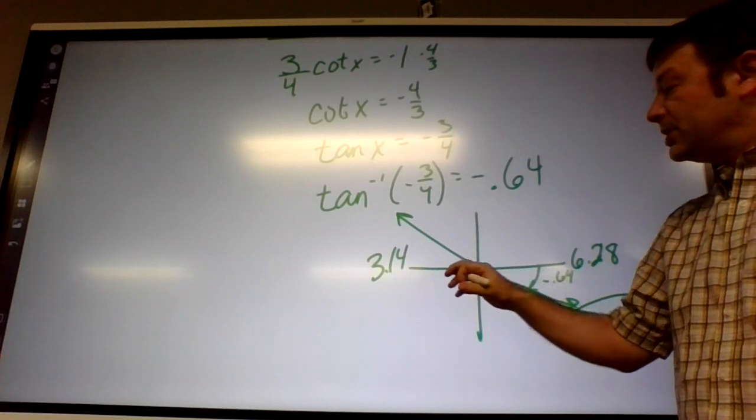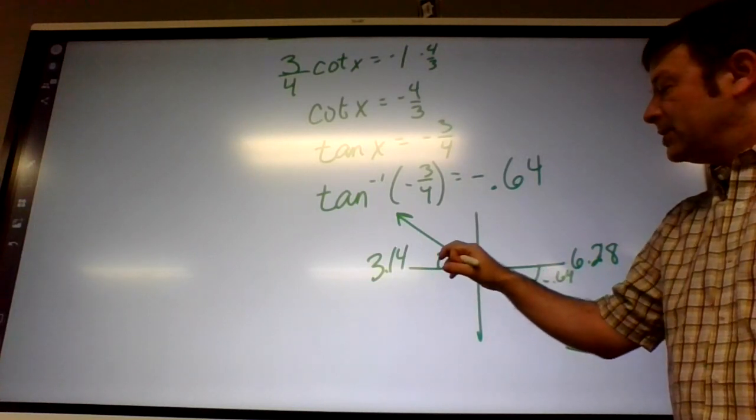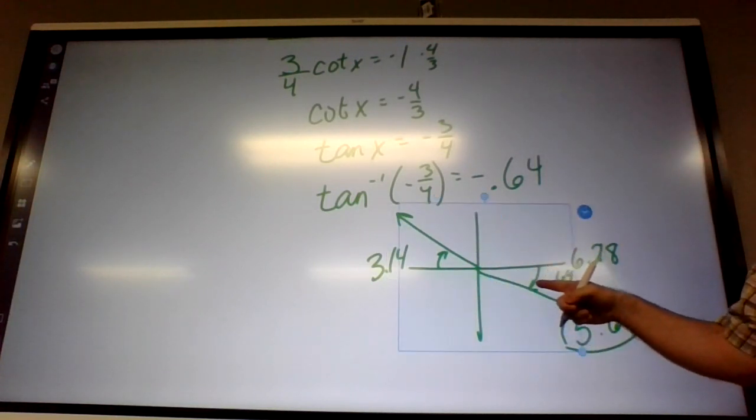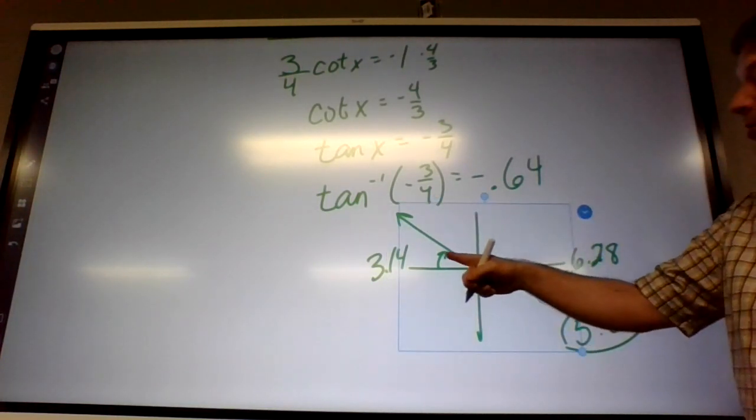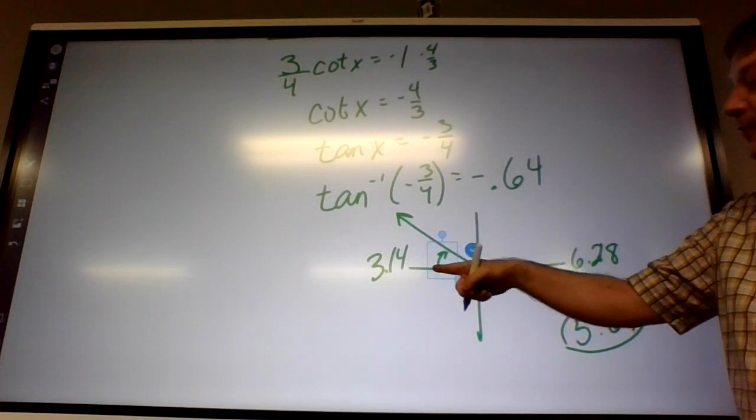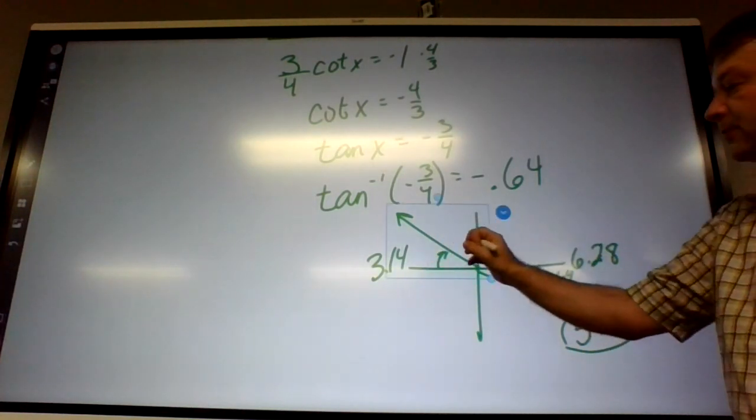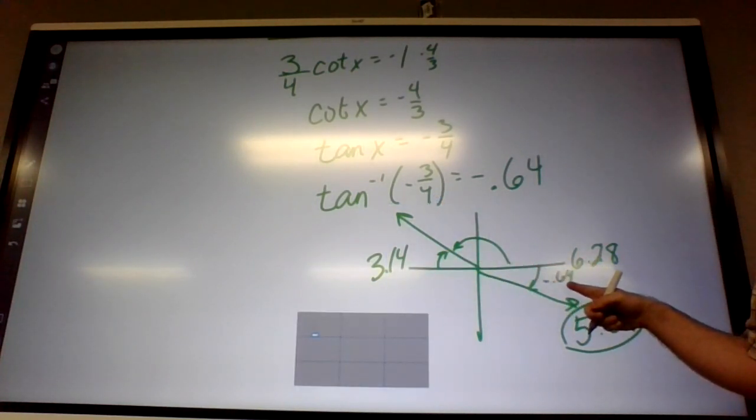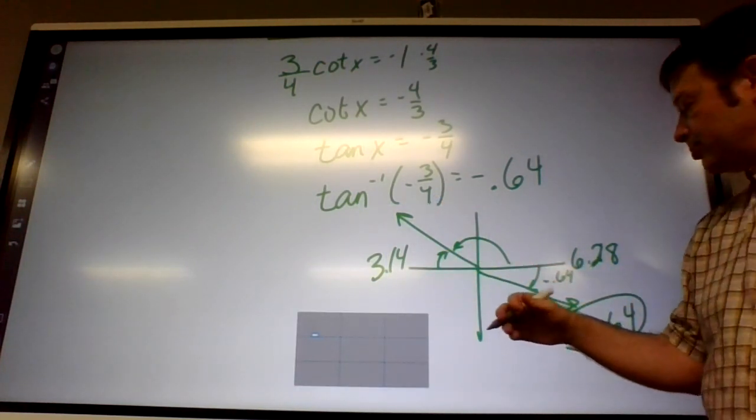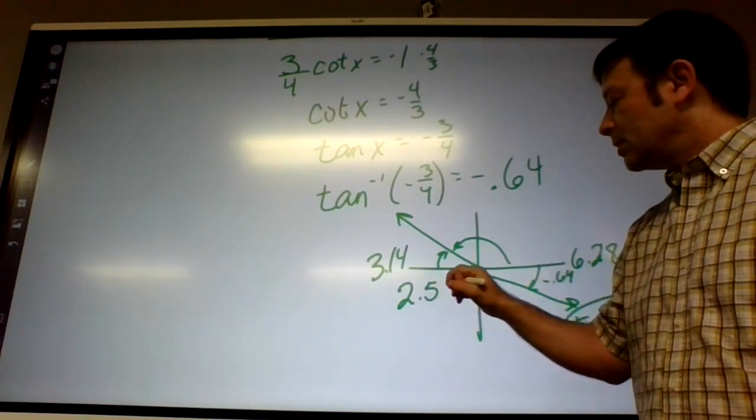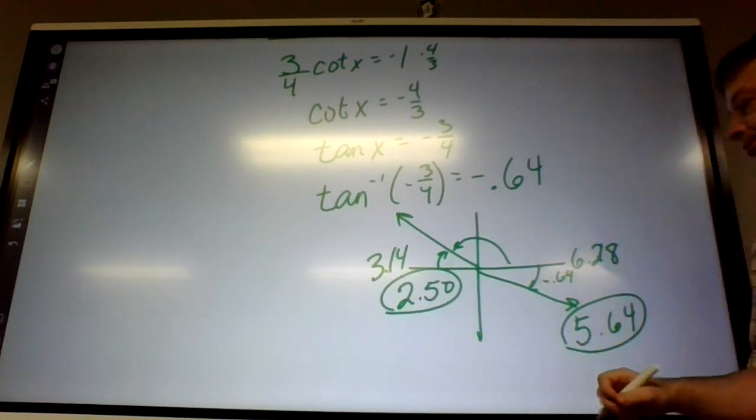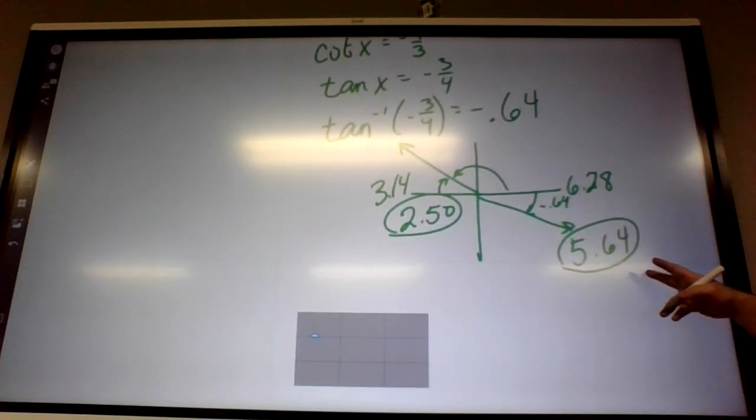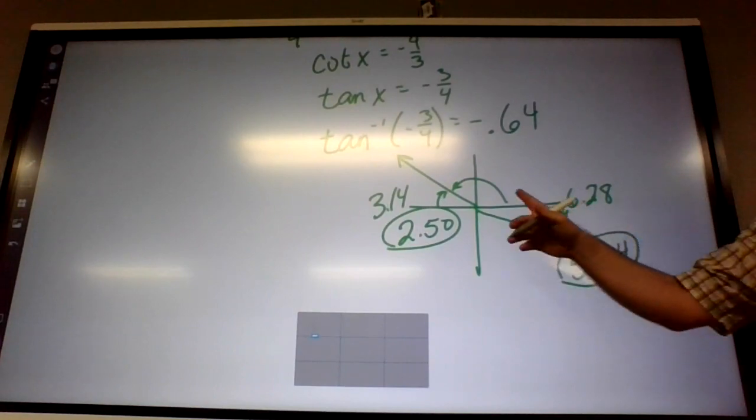So, we're going to need a second quadrant version of that. So, the second quadrant angle should have the same gap, the same reference angle, but this one is off of 3.14. So, it's going backwards from 3.14. So, we're doing 3.14 minus 0.64. 2.5. 2.50. That's what I was looking at earlier. So, those are the two.